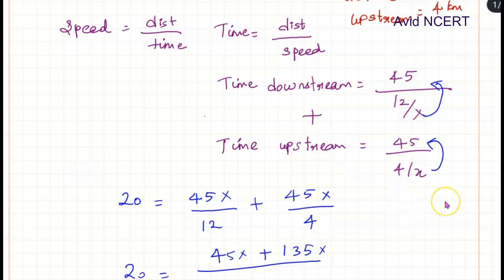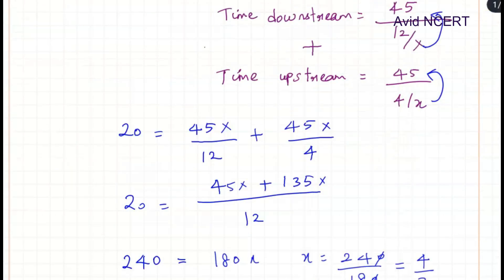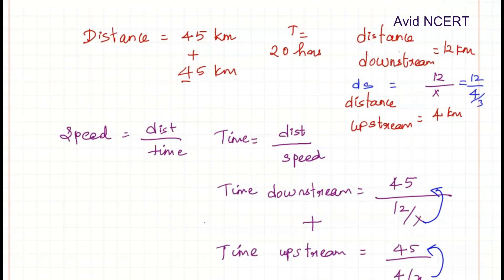Substituting x = 4/3 to find the speeds: downstream speed equals 12/x = 12 divided by (4/3) = 12 × (3/4) = 9 km/h. Upstream speed equals 4/x = 4 divided by (4/3) = 4 × (3/4) = 3 km/h. So upstream speed is 3 kilometers per hour.